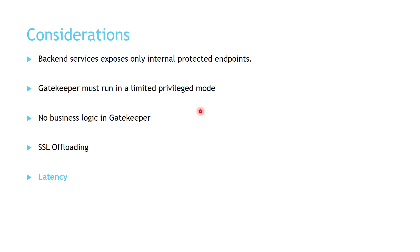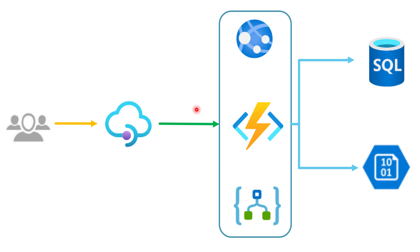Coming to latency: as you add more layers to your solution, expect a little more latency in the overall performance of your system. Finally, when you have a single API management instance, you are introducing a single point of failure. You can overcome this by having multiple instances of your API management, either in the same region or across different regions.